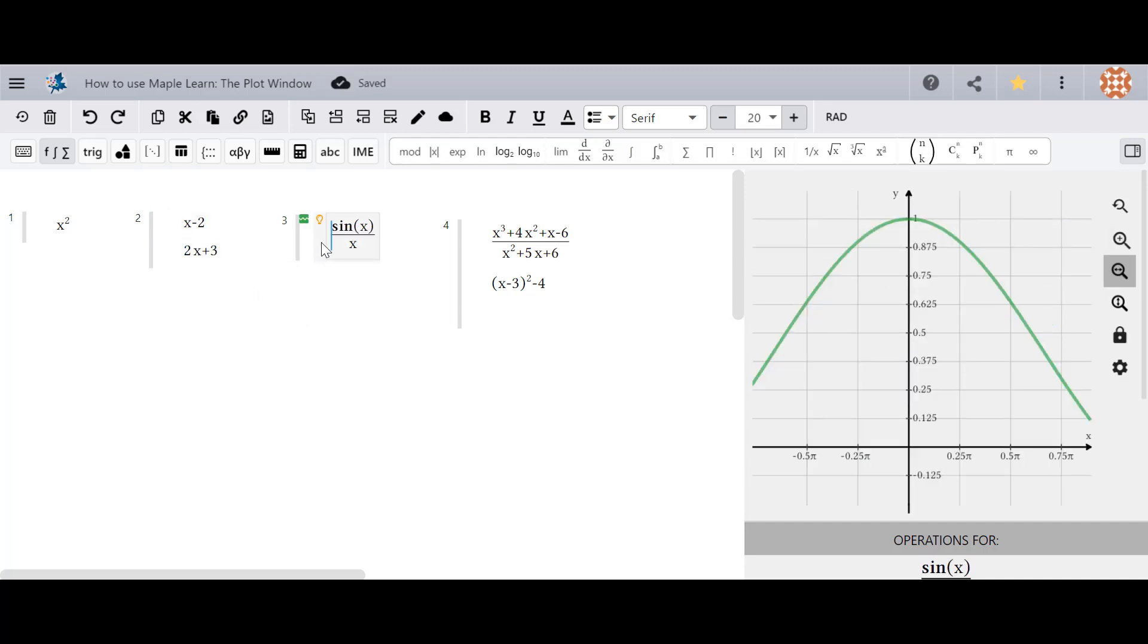When a function is entered into a cell, MapleLearn automatically chooses the appropriate scale and zoom level that clearly displays the features of the function.